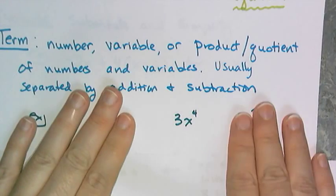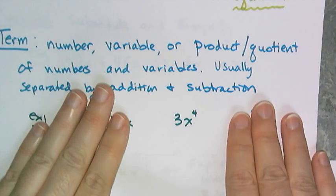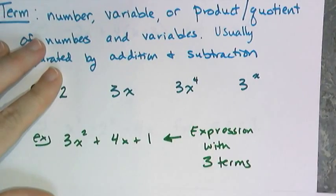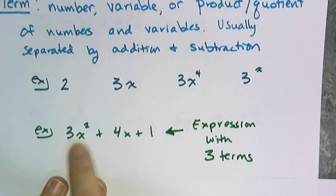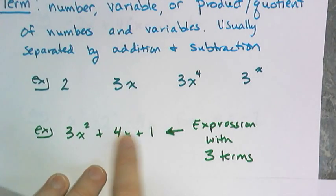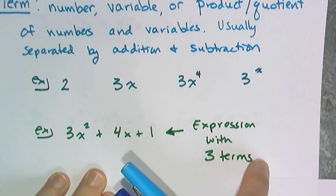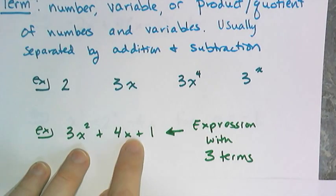And then three X to the fourth is a term, and three to the X power is an example of a term. So if I have this expression, three X squared plus four X plus one, this is an algebraic expression made up of three separate terms because they are separated by additions.